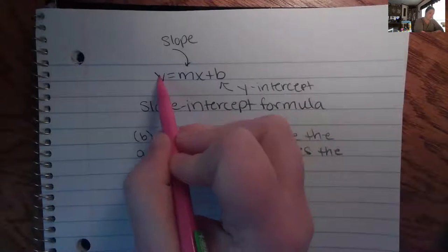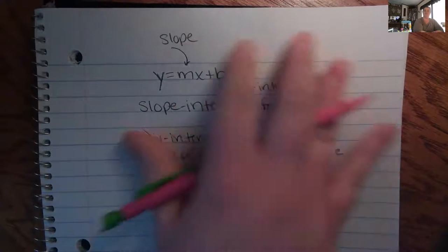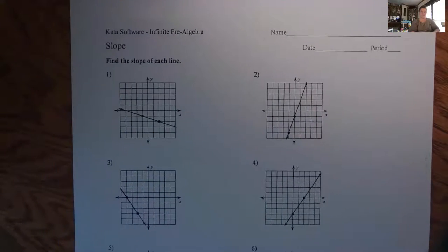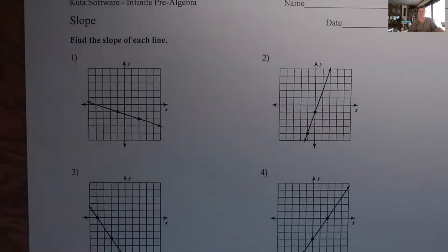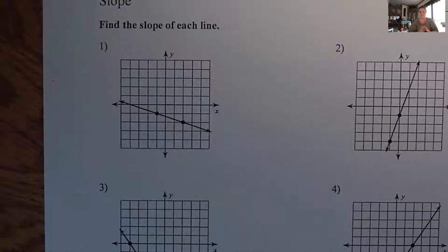The goal when you have an equation is that you want to get that y by itself. This first worksheet reviews finding slope multiple ways. Remember we talked about how we're going to have to find slope by looking at two points on a graph, by having two ordered pairs, and then by finding the slope from an equation.